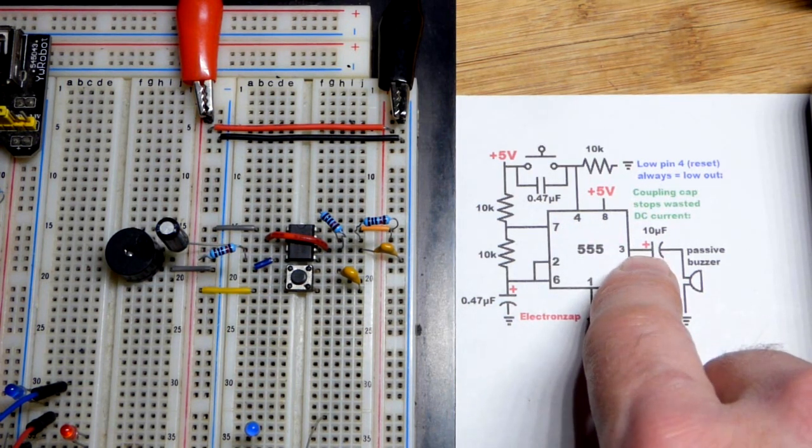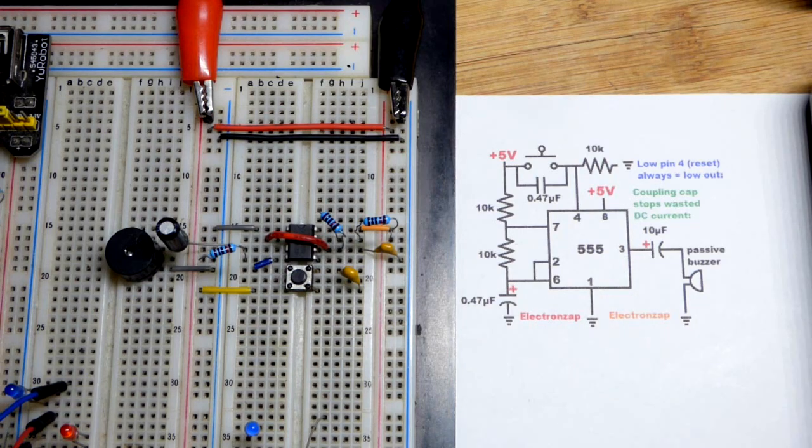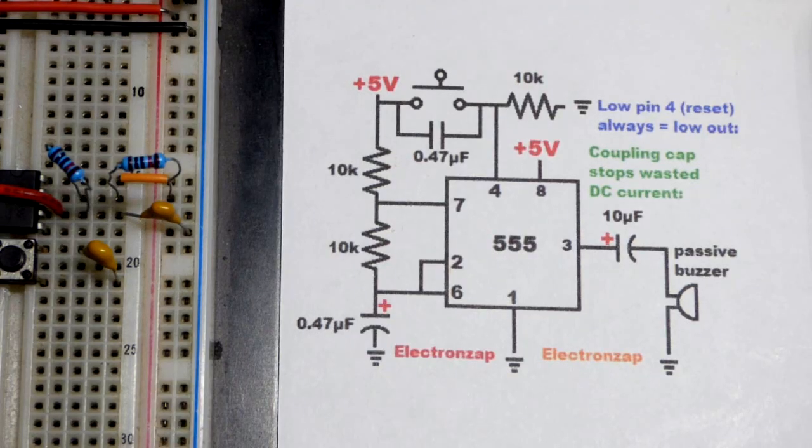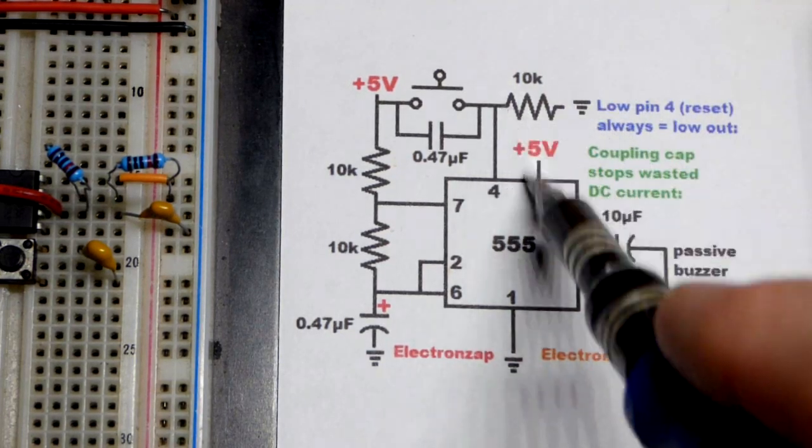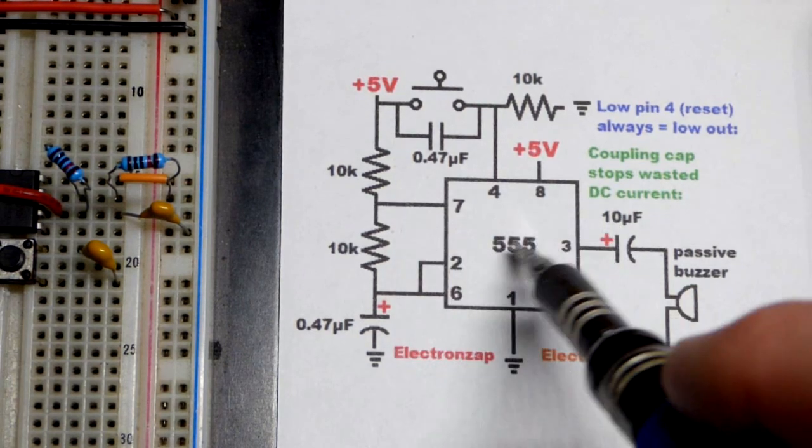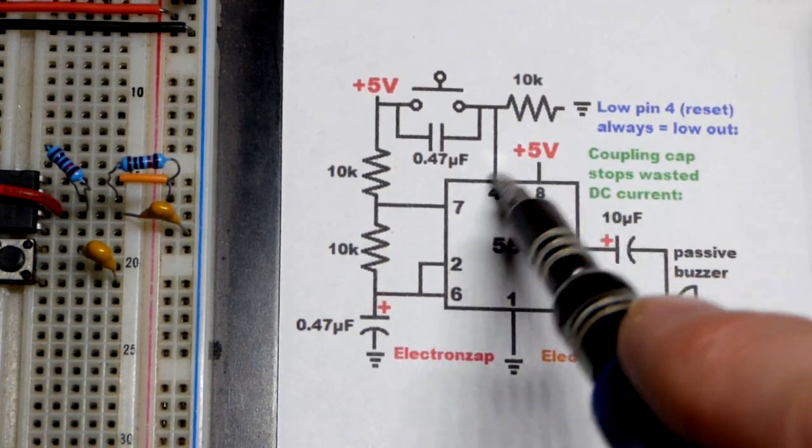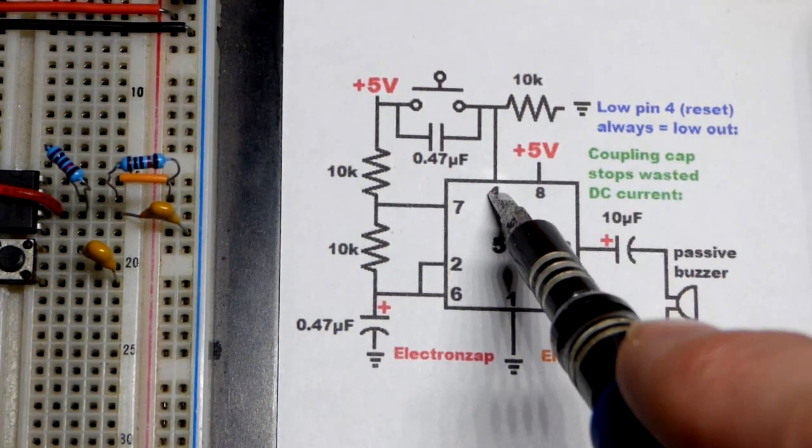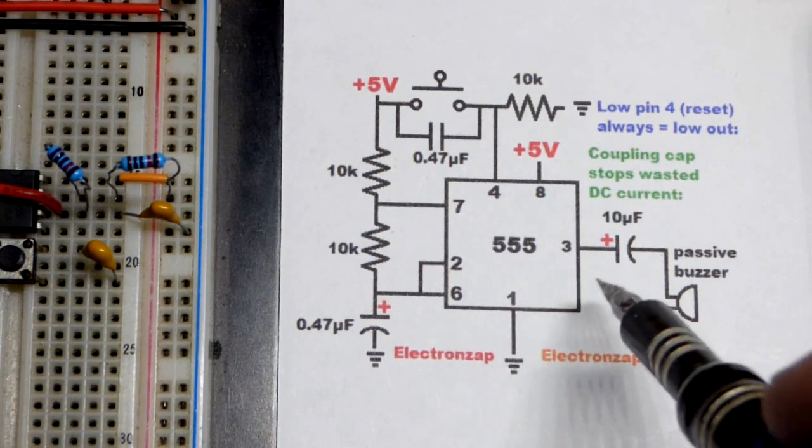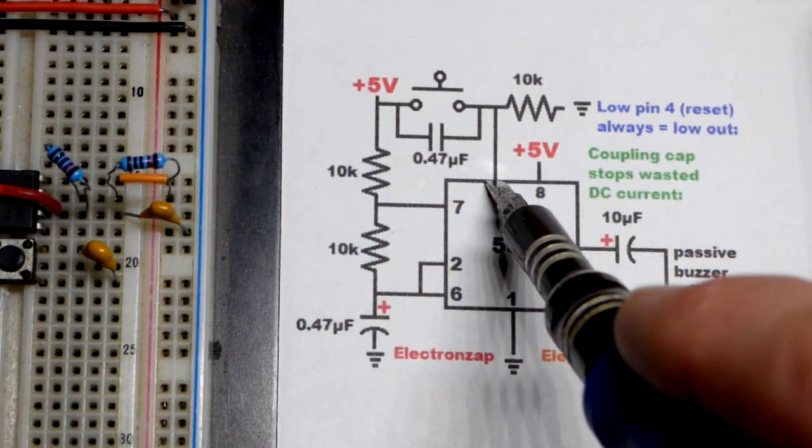So zooming in so you can see it a little bit better here, normally when 555 is in astable mode, pin 4 is directly to the positive supply. That tells it don't do anything, it lets everything else do what it wants, whatever it's wired up to do.